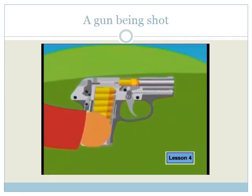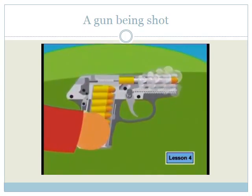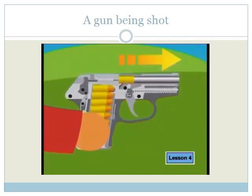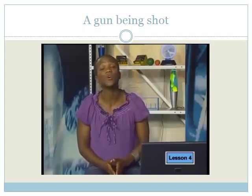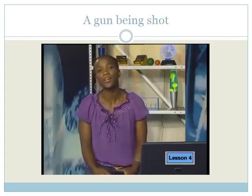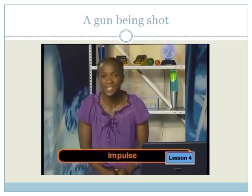Do you notice the smoke coming from the gun? This is because there is an explosion inside the gun, which propels the projectile out of the gun. This explosion is an external force on the projectile, which acts over a specific time period. This force acting over this specific time is known as impulse.